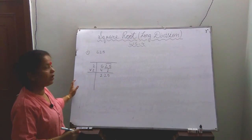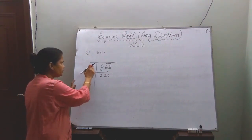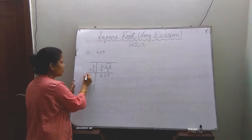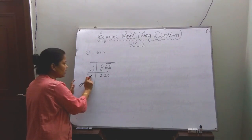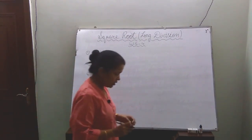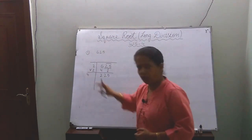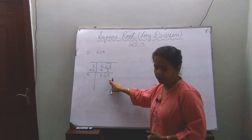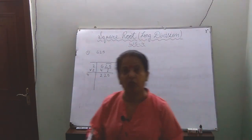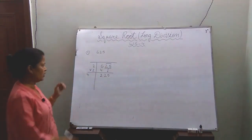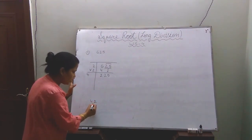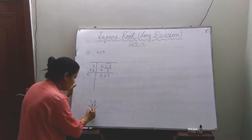Always copy the pair together. Now here you have to add these two numbers together and leave some space. You will write one number after this 4, and multiply with that same number. So if we write 2 after 4, we multiply it with 2 only. Let's see what result you get.